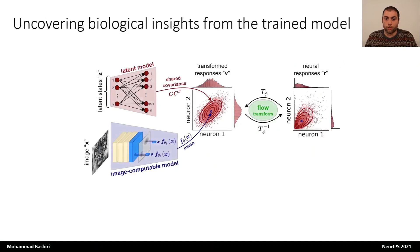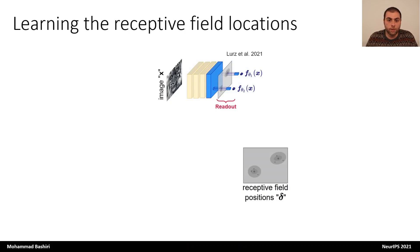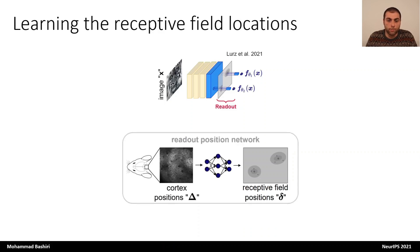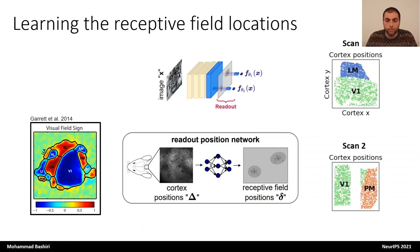Now that we have this model trained on neural responses, can we use it to gain some insight about the brain? Our image-computable model is equipped with a readout mechanism that learns the receptive field location of each neuron. While location can be defined as a parameter and learned directly by optimization, from retinotopy we know that neurons located close to each other on the cortex also have receptive fields close to each other in the visual field. So given the cortical location of the neurons, we can learn a function that maps cortical location into receptive field locations. We refer to this function as the readout position network. We also know that some areas have mirrored representation of the visual field while others don't, so we allow the readout position network to take a nonlinear form so that it can potentially learn such flips from the data.